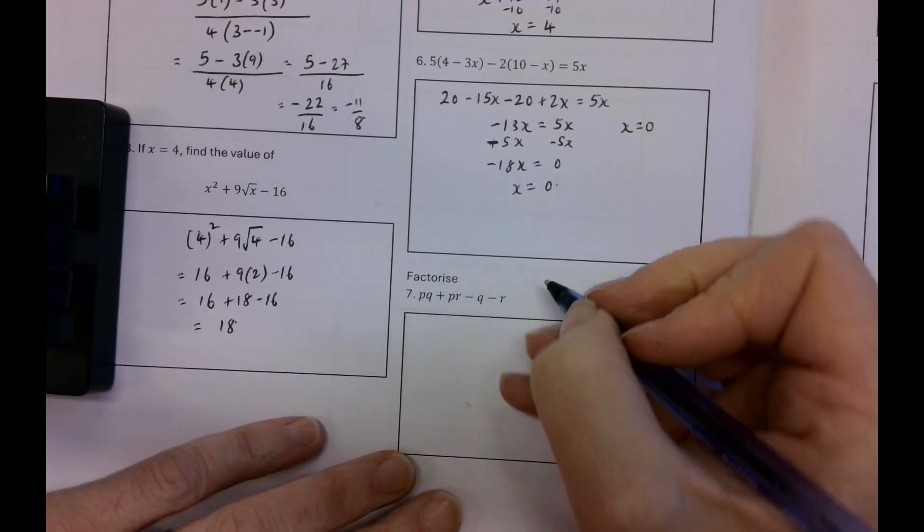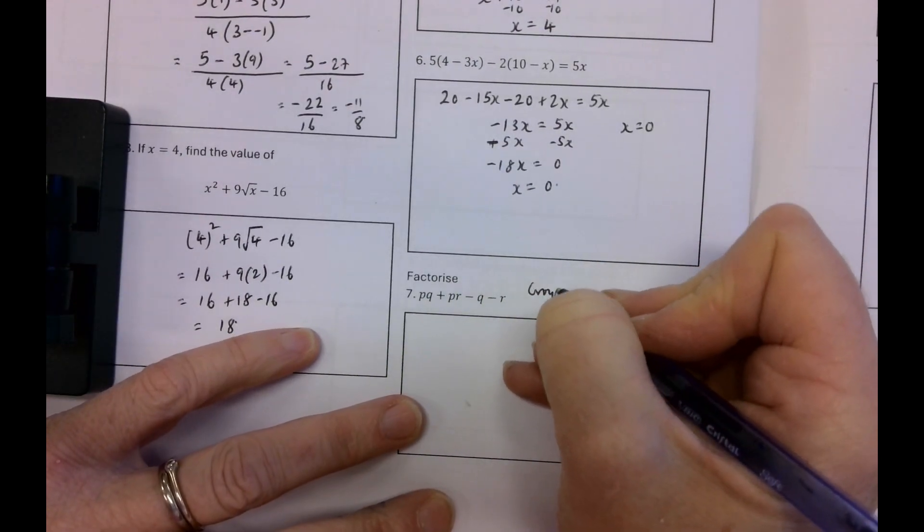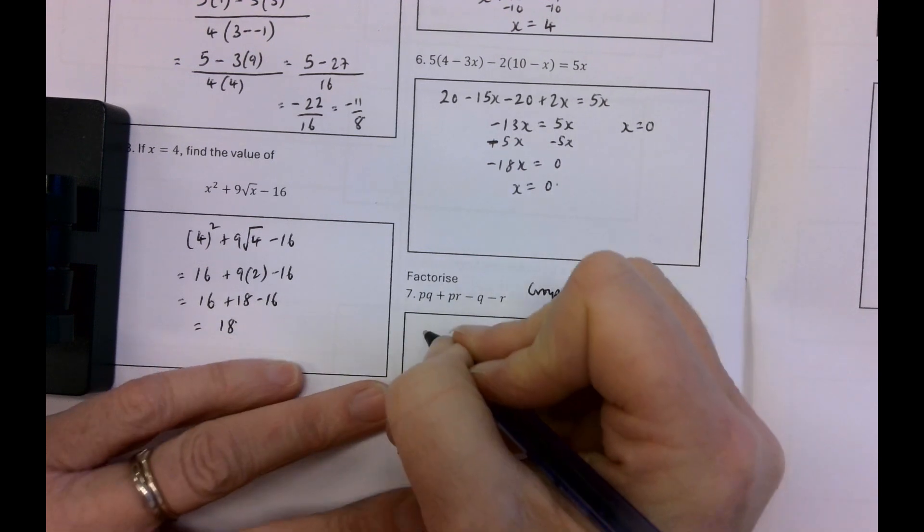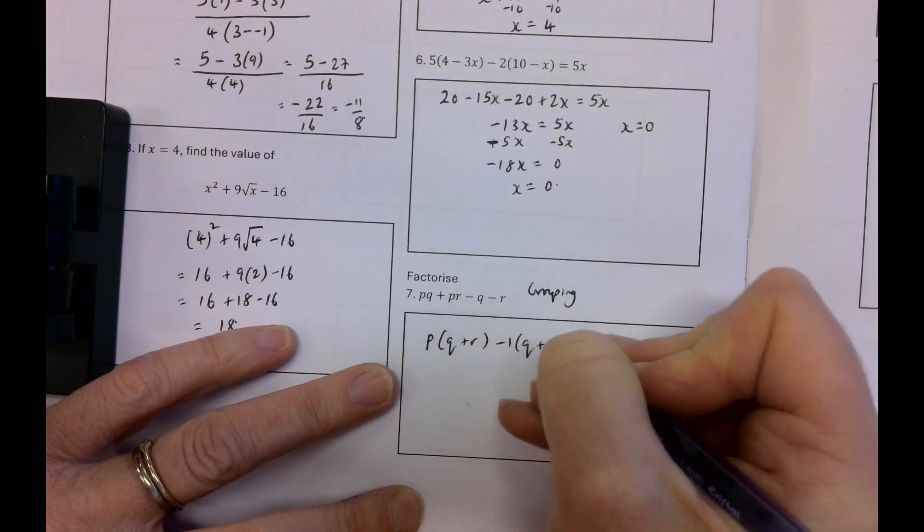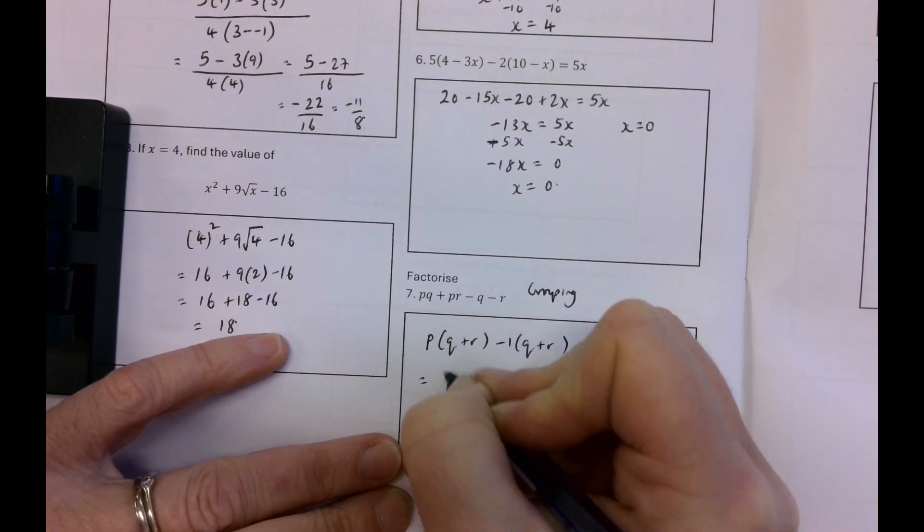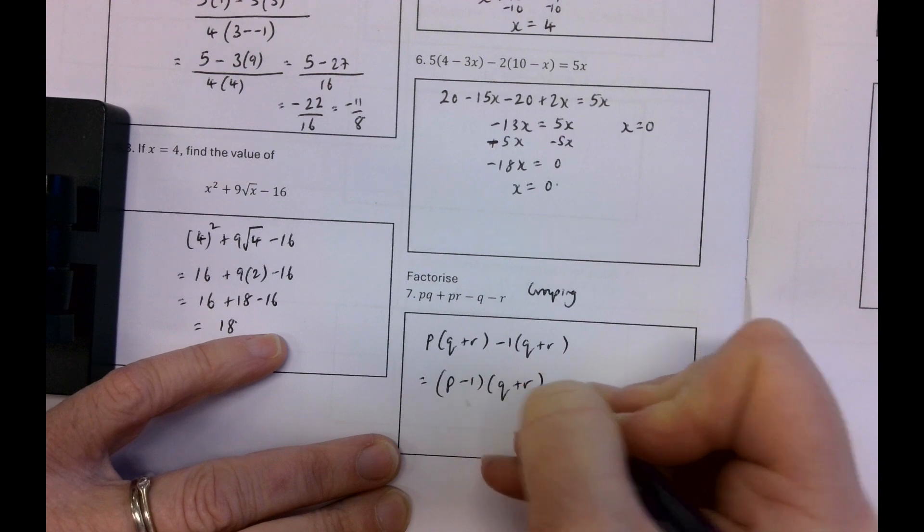Factorize. So this is a grouping because there's nothing in common right across. So p by q plus r minus 1 by q plus r is equal to p minus 1 by q plus r.